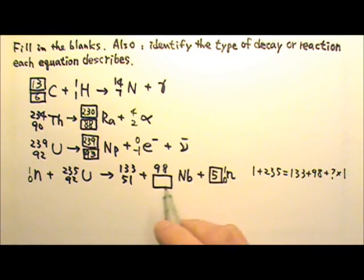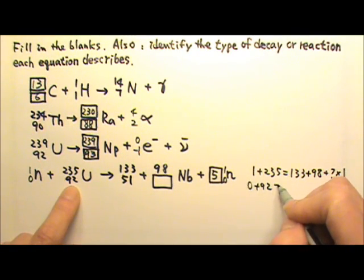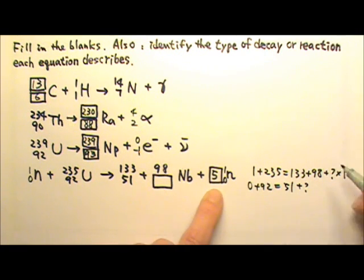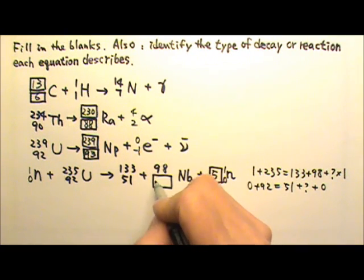And then we can do the bottom one here. 0 plus 92 equals 51 plus the blank plus 5 times 0. So the blank ends up being 41.